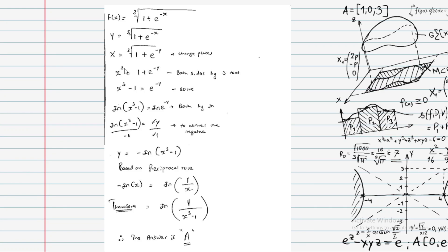So x cubed minus 1 equals e to the power of minus y. Apply the log property: take ln of both sides. Then e to the power of minus y equals x cubed minus 1, so minus y equals ln(x cubed minus 1).